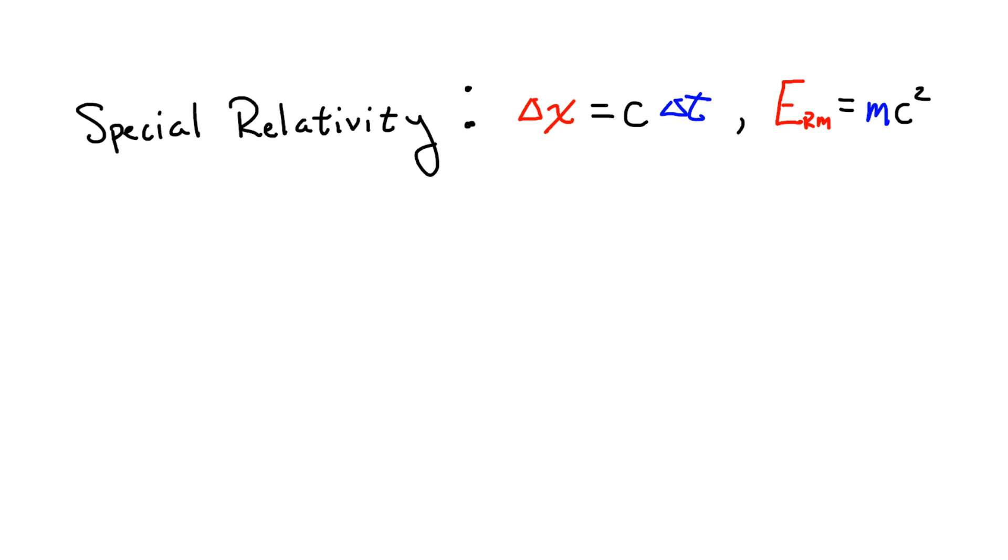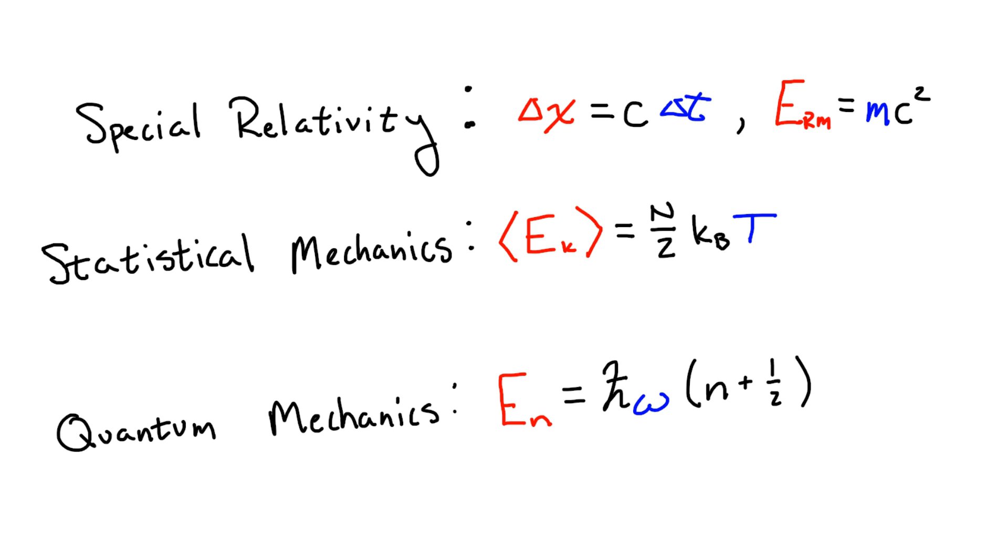This happens in other theories as well. For example, in statistical mechanics, a system's temperature is related to its average kinetic energy by some number times Boltzmann's constant. In quantum mechanics, the energy of a harmonic oscillator is just some number times h-bar times its angular frequency. Over and over again these relationships turn up.